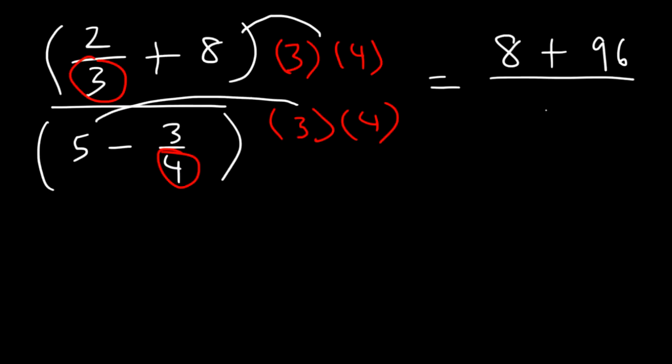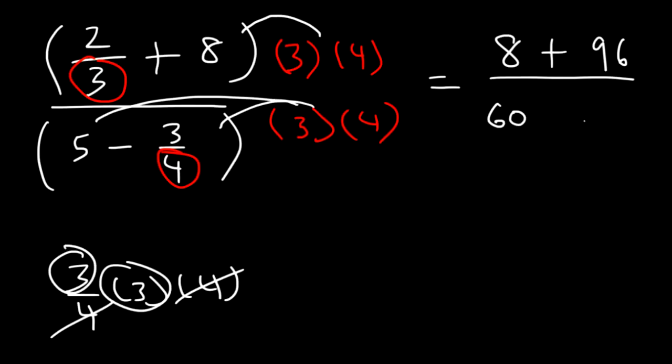Now, 12 times 5, that's 60. And 12 times 3 fourths, let's write it out. That's 3 fourths times 3 times 4. The 4s will cancel. And we're going to have 3 times 3 left over, which is 9. But don't forget about the negative sign.